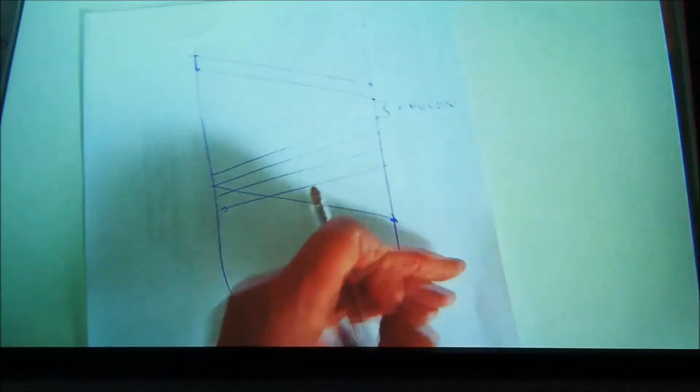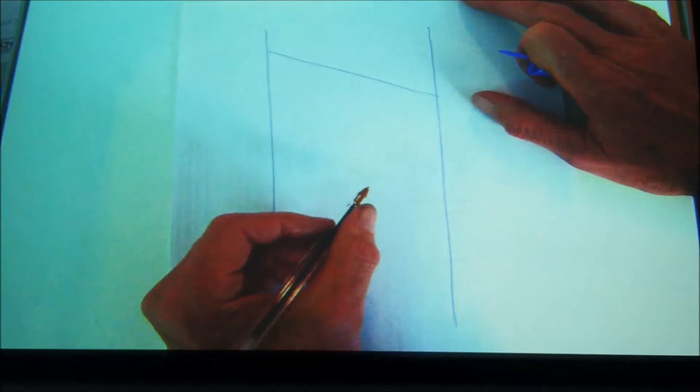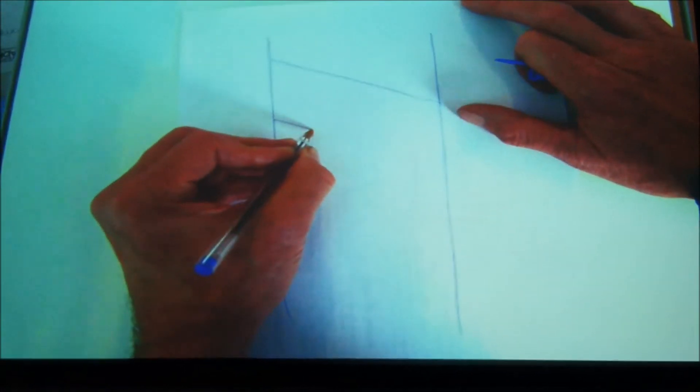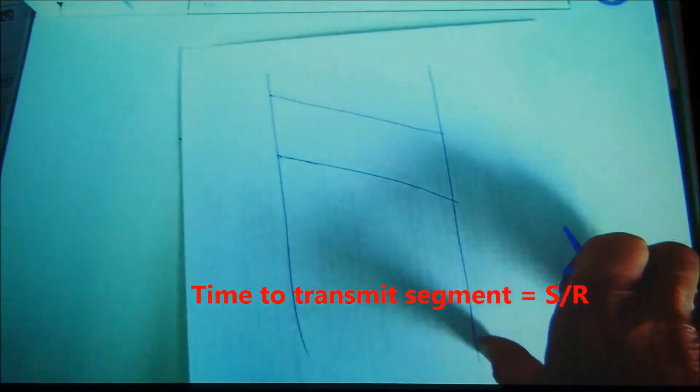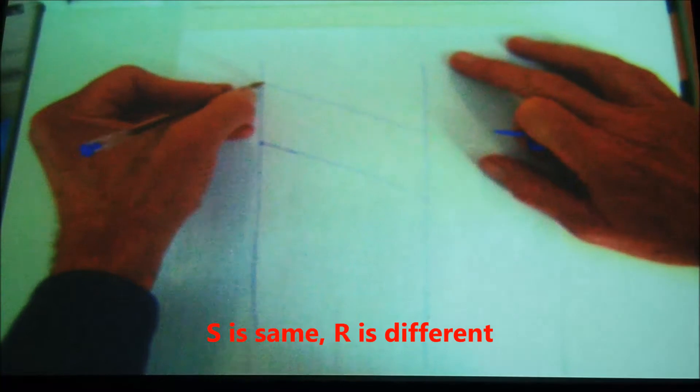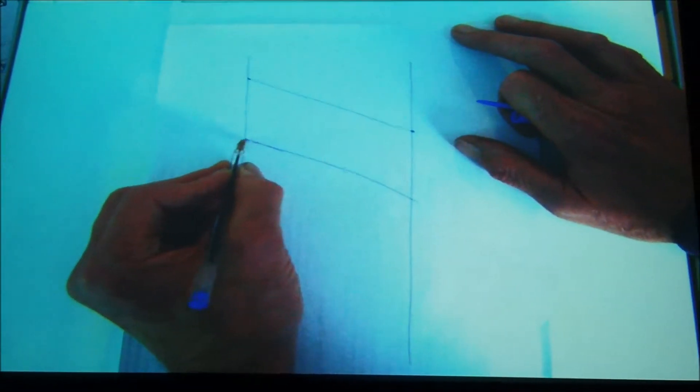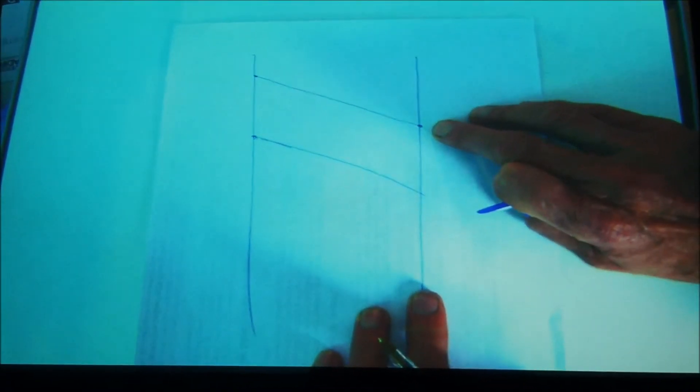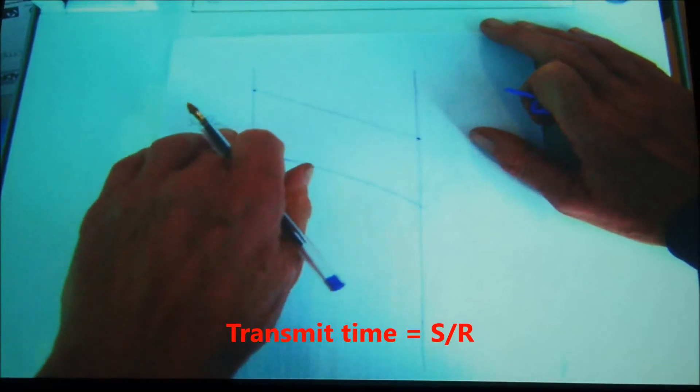So if we did the same thing over a slower line, then instead of trying to draw the lines at a different slope, what would happen is, if we go from a fast line to a slower line, then that's the same size of data as we had on the previous one, but it takes a lot longer to get the bits out. And it might be that the first bit has arrived here before the last bit has even been sent. This is our S and R combination, our segment size and our rate of sending.